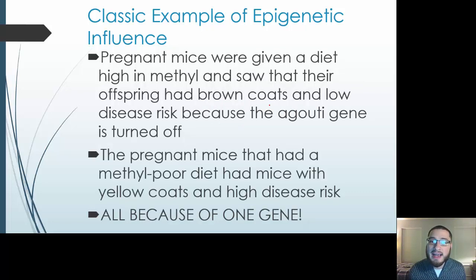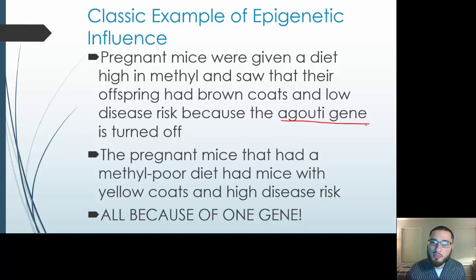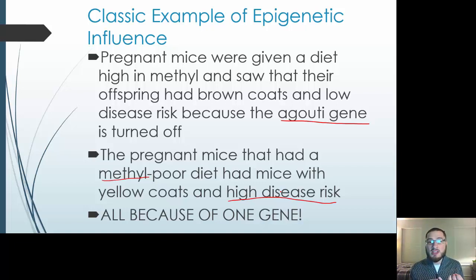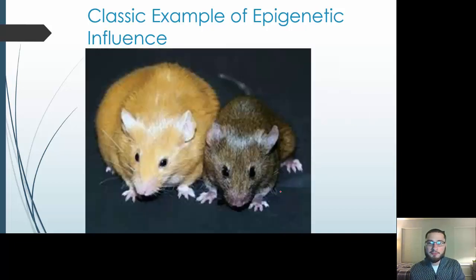Another example: pregnant mice given a diet high in methyl had offspring with brown coats and low disease risk, because the agouti gene — a bad gene — was turned off. Pregnant mice with a methyl-poor diet didn't have the methyl needed to silence those genes. Those mice had a yellow coat and a much higher disease risk. So just by turning on or off one single gene out of 30,000 in the human genome, these mice had a different coat color and were prone to diseases at a different rate.